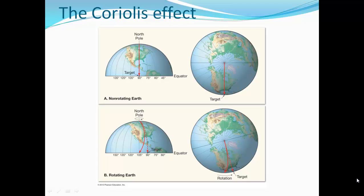So the Coriolis effect: if the Earth was not rotating and wind traveled from one point to another, we wouldn't see it deflected at all. But since the Earth is rotating, we see that the air gets deflected to the right.